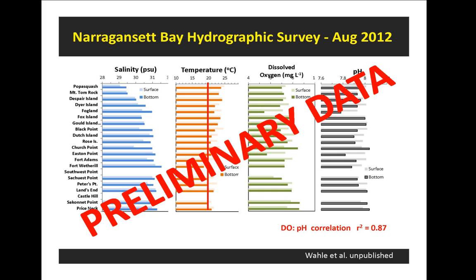During that study, we also did a complete hydrographic survey at these sites, getting measures of salinity, temperature, dissolved oxygen, and pH. On the August survey, most sites were well above 20 degrees Celsius both at the surface and the bottom. Dissolved oxygen and pH were strongly correlated, which suggests a strong influence of benthic respiration on DO and likely pH, reducing pH as a result of CO2.